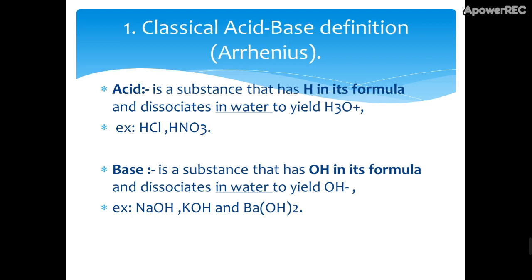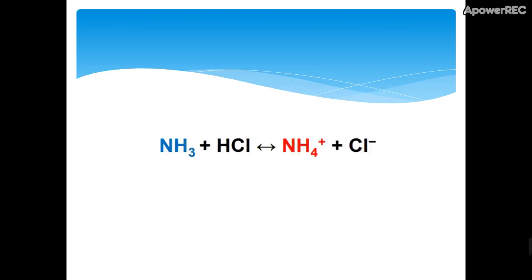If you look at the Arrhenius definition, it depends on H and OH. If I have a comparison like ammonia and hydrochloric acid — hydrochloric acid as the acid and ammonia as the base — HCl has a proton and donates it to ammonium. But ammonia, NH3, is it a base according to Arrhenius? No, because it does not have OH. So the Arrhenius definition is restricted.